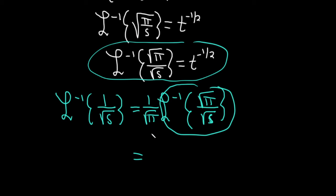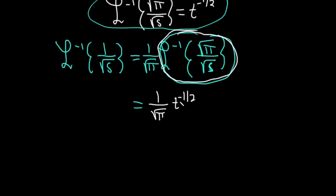So this is equal to 1 over the square root of pi times t to the negative one-half. Because this piece I've circled here in white and in blue is equal to t to the negative one-half. So you can rewrite this. You can write this as 1 over the square root of pi times 1 over t to the one-half if you like.